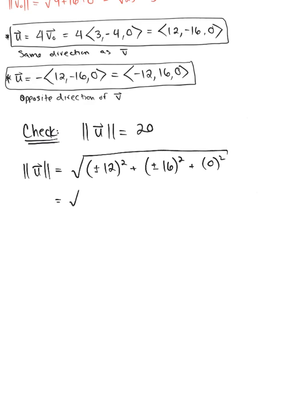So this becomes the square root of 144 plus 16, or negative 16 squared leaves us with 256, and then 0. So we have 144 plus 256 leaves us with the square root of 400.